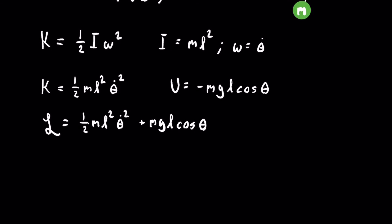According to the Euler-Lagrange equation, the first thing we do is take the partial of the Lagrangian with respect to theta. The only theta in the Lagrangian is in the second term, which is filled with constants except for cosine of theta. Taking the partial with respect to theta gives us negative mgl sine of theta.